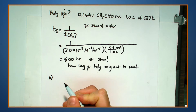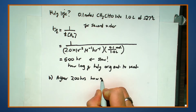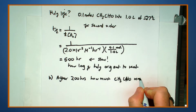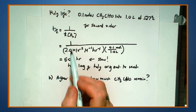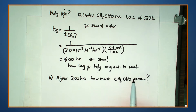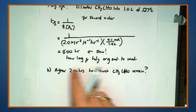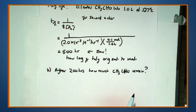Part B of the question asks: after 200 hours, how much CH₃CHO remains? Be very careful with questions like this. All these equations use A, which is the remaining reagent. Make sure you check whether the question asks for how much reagent remains or how much has reacted — those are complementary, not the same. If they give you the amount that has reacted, subtract from the original to get the amount remaining.